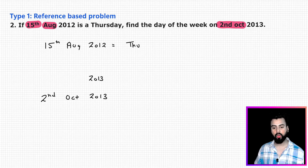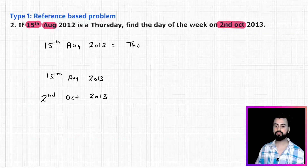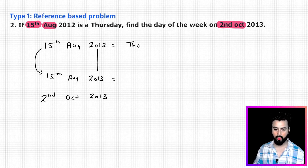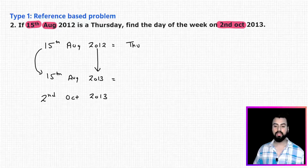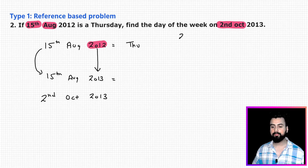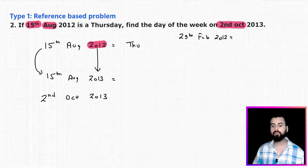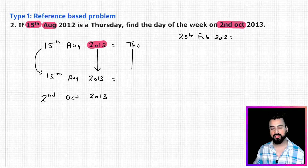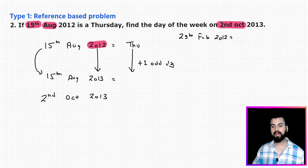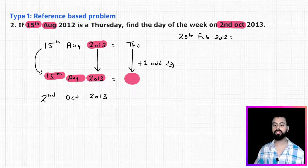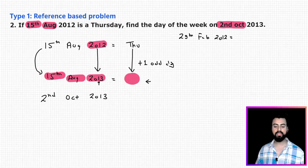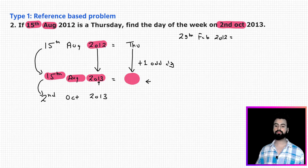First, let's move to the same date in the new year — find the day on 15th August 2013. There is only one year difference. Although 2012 is a leap year, 29th Feb 2012 will not be part of this calculation, so it's treated as an ordinary year — one odd day. Adding one odd day to Thursday gives Friday for 15th August 2013.